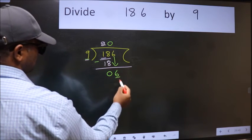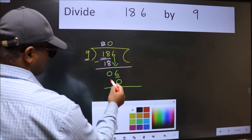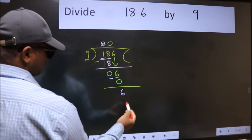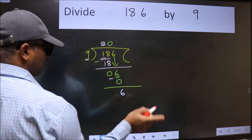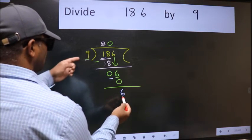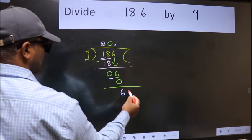So 9 into 0, 0. Now we subtract, we get 6. Over here we did not bring any number down and 6 is smaller than 9. So now we can put dot and take 0.